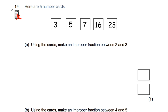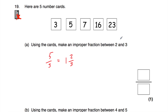Question number 19: here are five number cards — 3, 5, 7, 16, and 23. Use the number cards to make an improper fraction between 2 and 3. Trying 5 thirds: how many 3s go into 5? That's 1 remainder 2 — so 1 and 2 thirds. That's not between 2 and 3. Trying 7 thirds: how many 3s go into 7? That's 2 remainder 1 — so 2 and 1 third. That's between 2 and 3, so 7 thirds works.